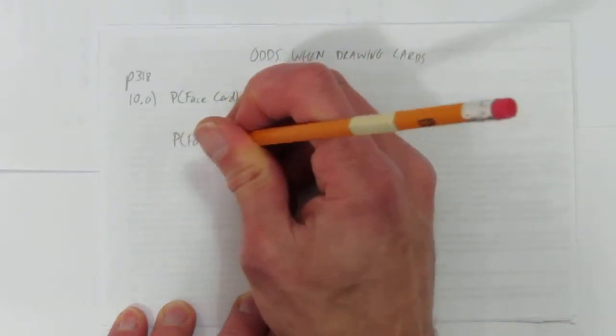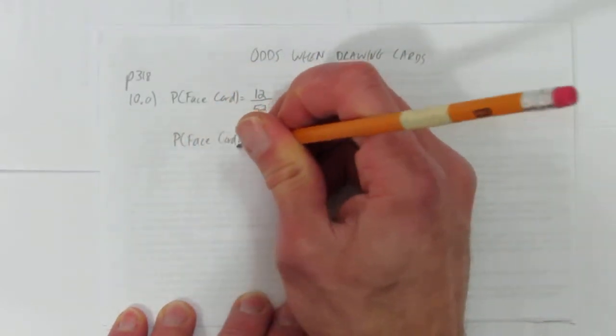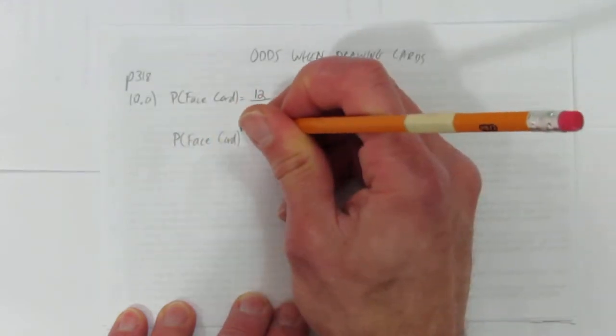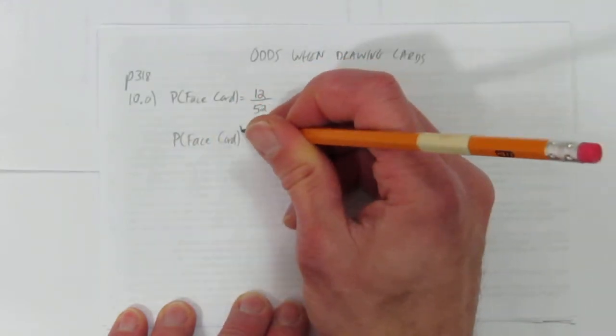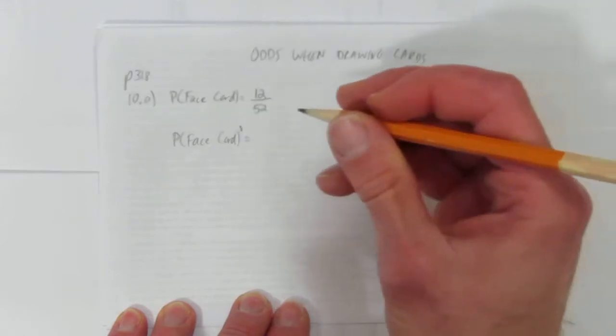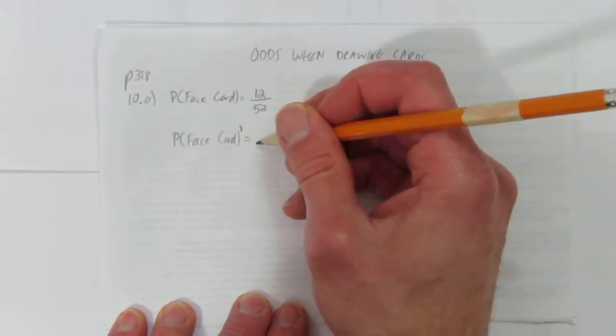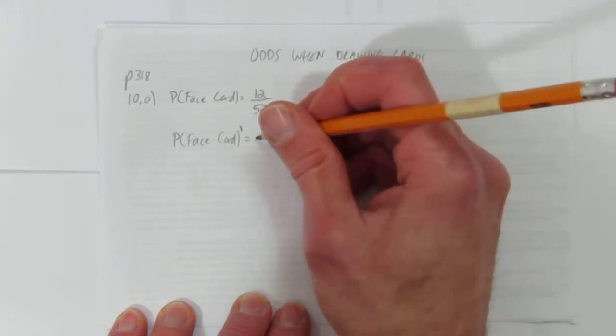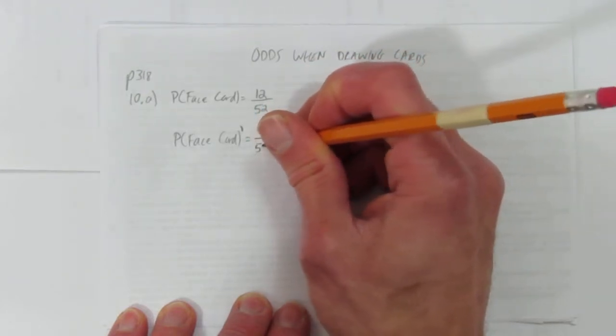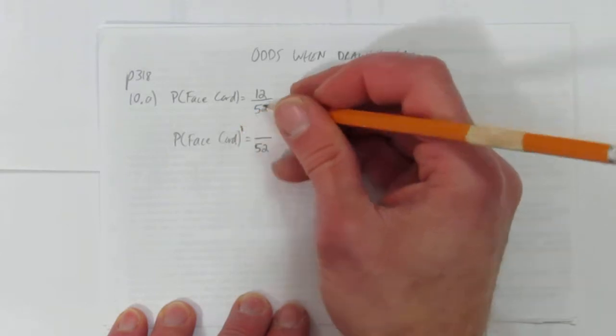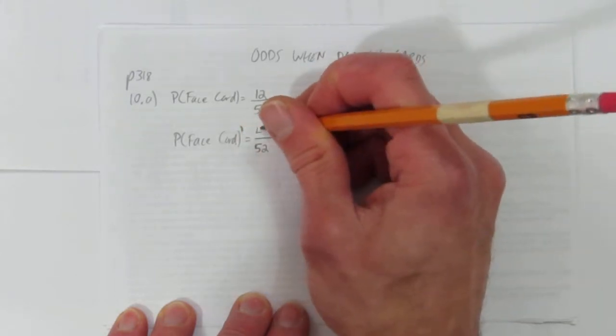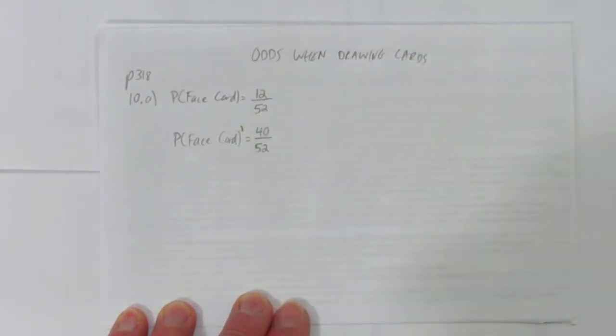That means the probability of not getting a face card, which we write probability of face card with an apostrophe to signify not getting a face card, would just be the probability of 100% or 1 take away this fraction. In other words, there are still 52 total cards. But how many of them aren't face cards? 52 minus these 12 or 40 cards.